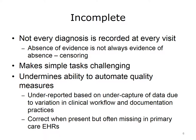Data may also be incomplete. For example, not every diagnosis is recorded at every visit. In other words, the absence of evidence is not always evidence of absence. This is an example of a concern known by statisticians as censoring. Incomplete data makes tasks that are seemingly simple quite challenging, such as the identification of diabetic patients, and undermines the ability to automate quality measurement. One study found that quality measures were underreported due to undercapture of data from variation in clinical workflow and documentation practices. Another study found that quality measures are usually correct when present, but are often missing in primary care electronic health records.